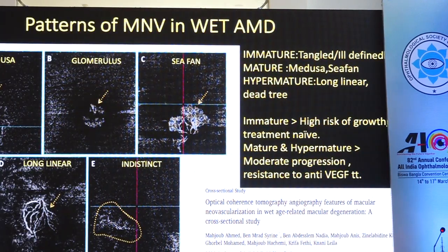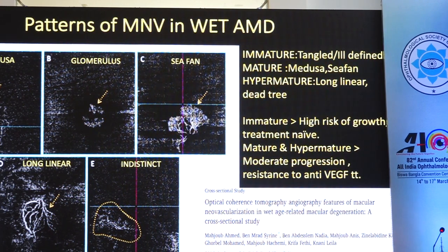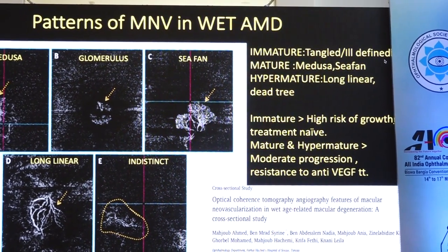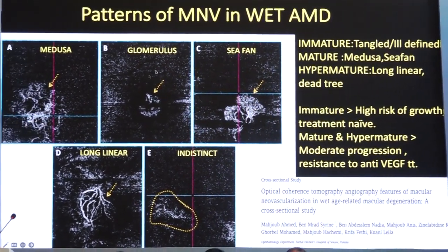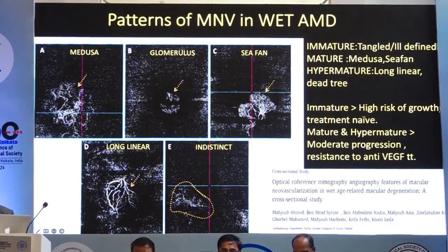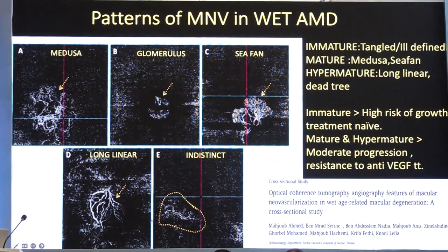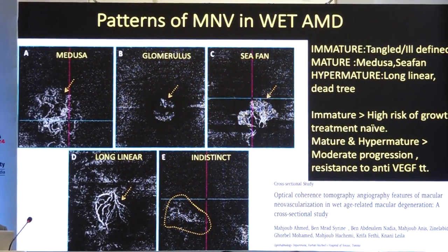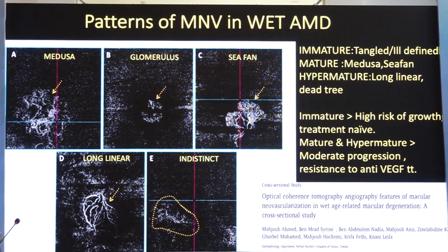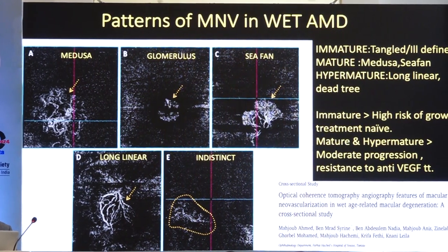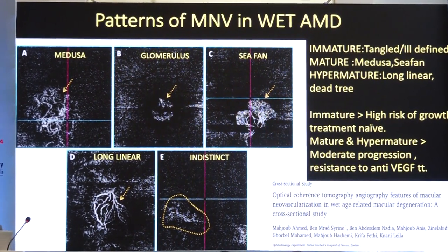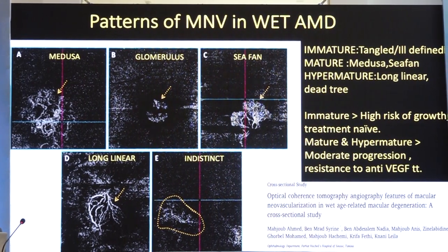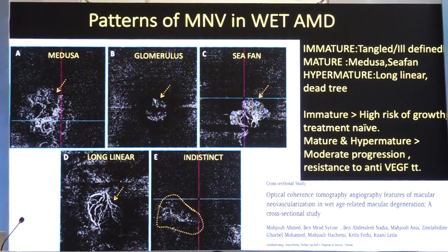There are characteristic patterns of macular neovascularization in wet AMD. There can be tangled or ill-defined neovascularization, which are generally immature. Medusa and sea-fan lesions are generally mature; hypermature are the long linear and dead tree type of lesion. These immature lesions have high risk of growth and are mostly treatment naive. Mature and hypermature lesions have moderate chances of progression and some may have resistance to anti-VEGF injections. Based on the appearance of these macular neovascularization patterns, you can assess how the lesion is going to behave, the age of this lesion, and whether it is treatment naive or active.